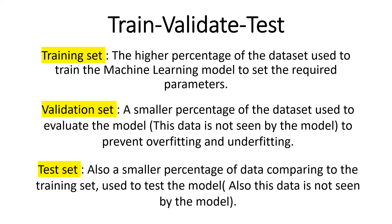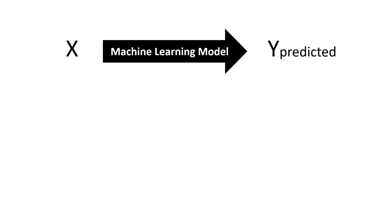This second splitting category of data is generally used when working with Kaggle competitions. For example, in Kaggle they will offer you two sets: the train set and the test set. So you can split the train set into training and validation to evaluate your model before applying it to the test set, which provides the results that you are going to submit to the Kaggle competition.